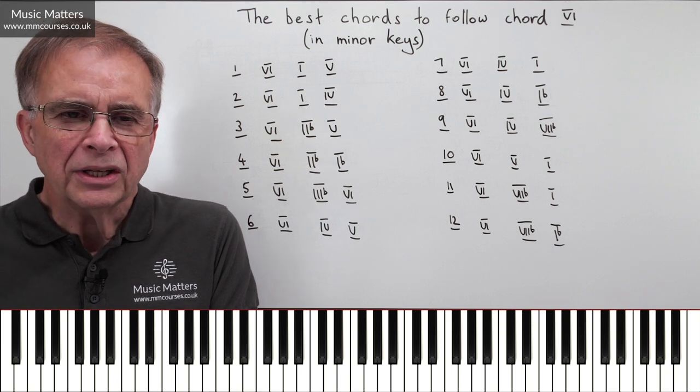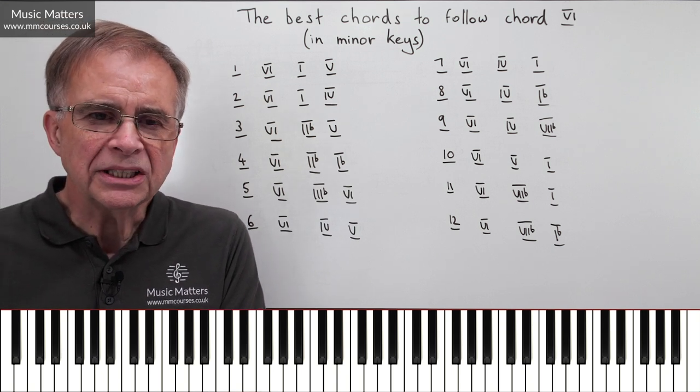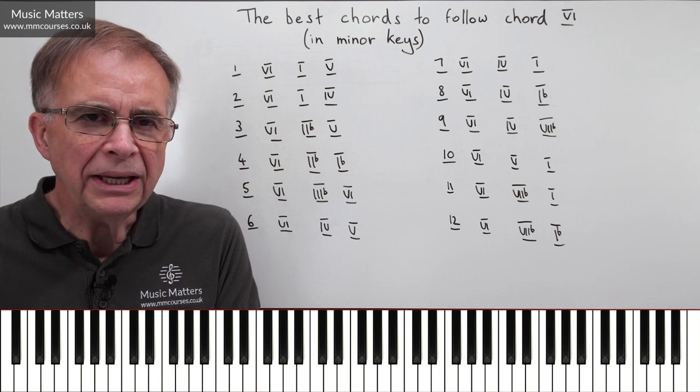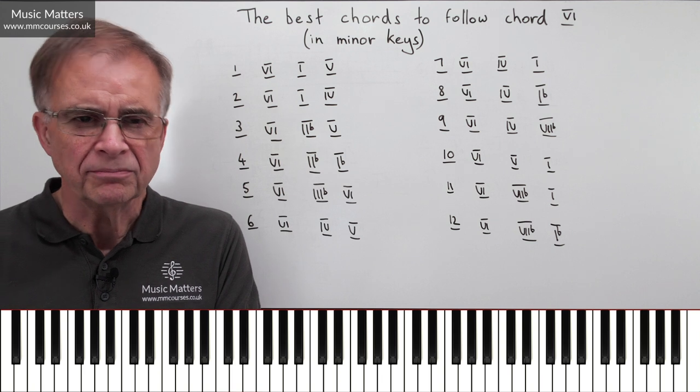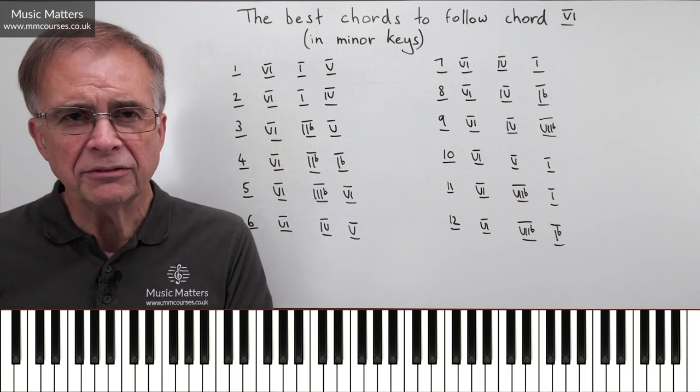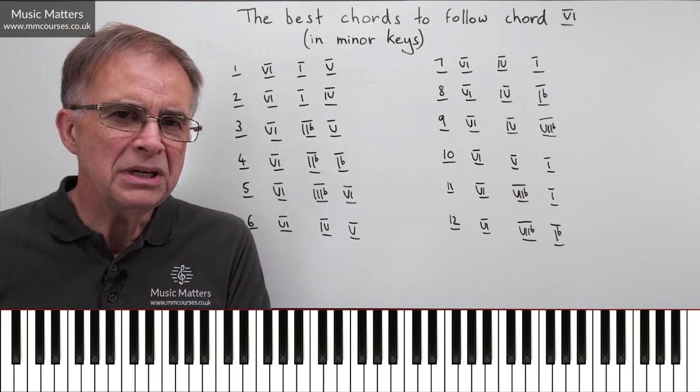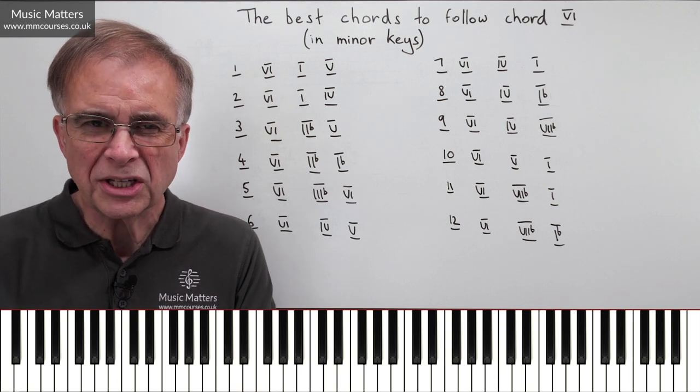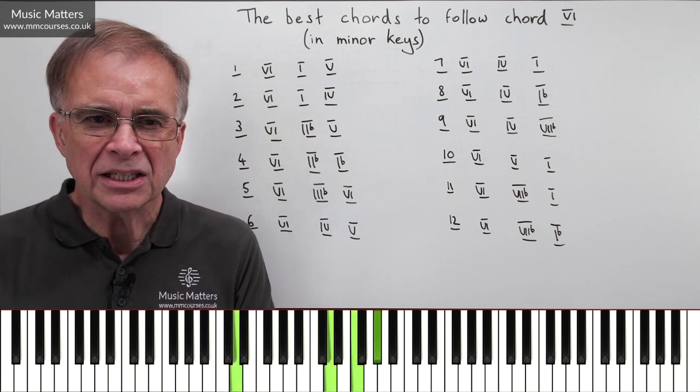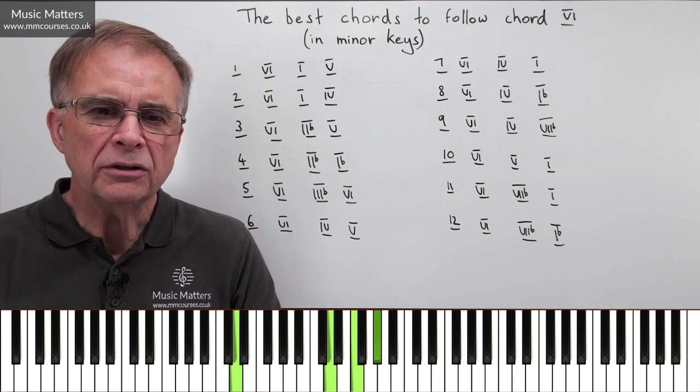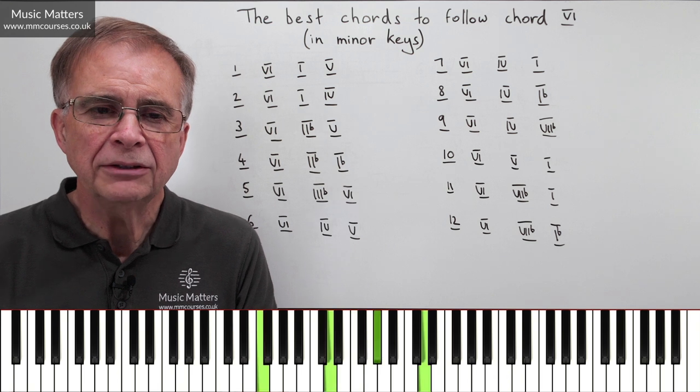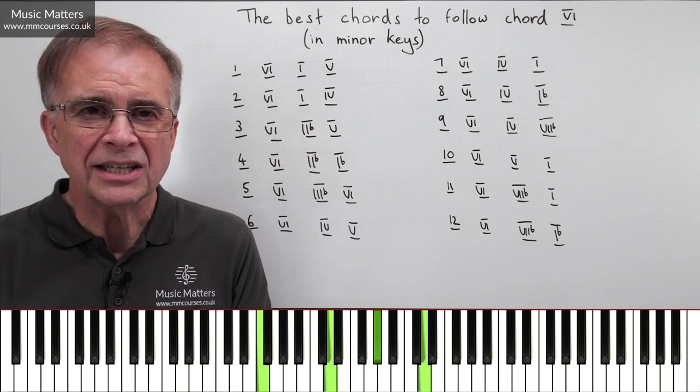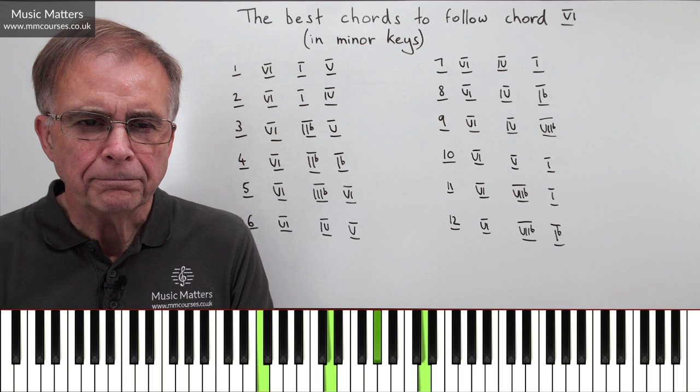Now have a think about the next one. I've now got a couple of possibilities using chord IIb, or II6, so chord II in first inversion. Why am I using II in first inversion? Because it's a diminished chord when you use it in root position. Some people think that's a slightly ugly sound. I think maybe because you've got this tritone between the outer parts. So if you put it in first inversion, it tends to sound a little bit warmer.